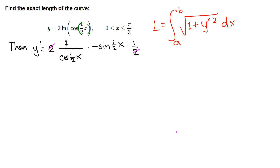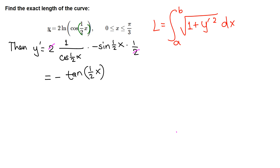We can simplify: the 2 on top and 2 on the bottom cancel. We have negative sine, so let's put the negative in front. We get sine(x/2) over cosine(x/2) — same angle — and we know that sine over cosine is just tangent. So y' = -tan(x/2).